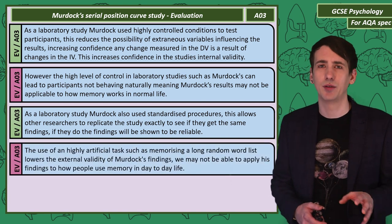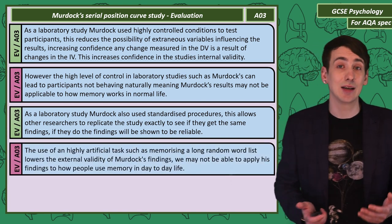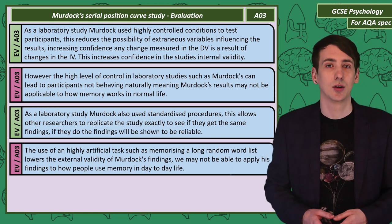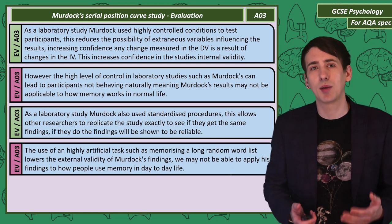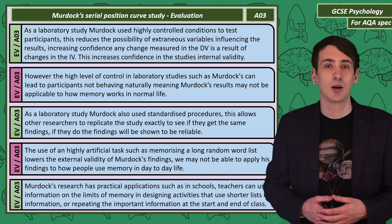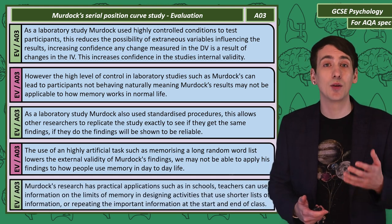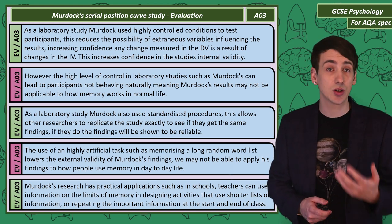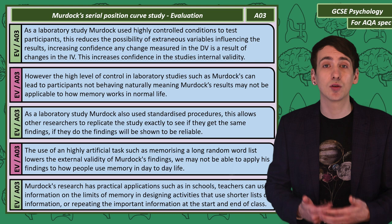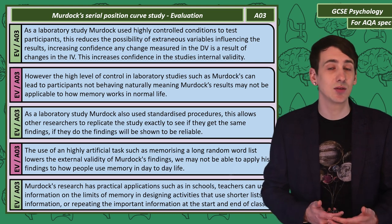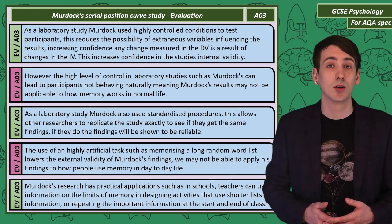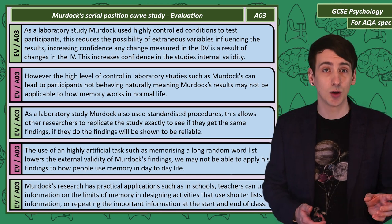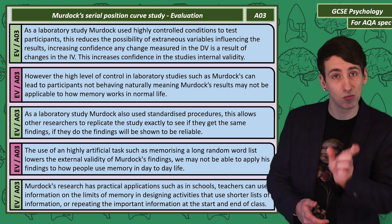Murdoch's task, however, was artificial. Very rarely in our day-to-day lives do we need to remember a long, random list of words, so Murdoch's findings might not really apply to how people use memory in day-to-day life. We can also evaluate the research in terms of how it could be applied. The knowledge gained by Murdoch can be used in schools to help teachers design activities — knowing that information at the start and end of lists is more likely to be remembered, you could put less important information right in the middle.